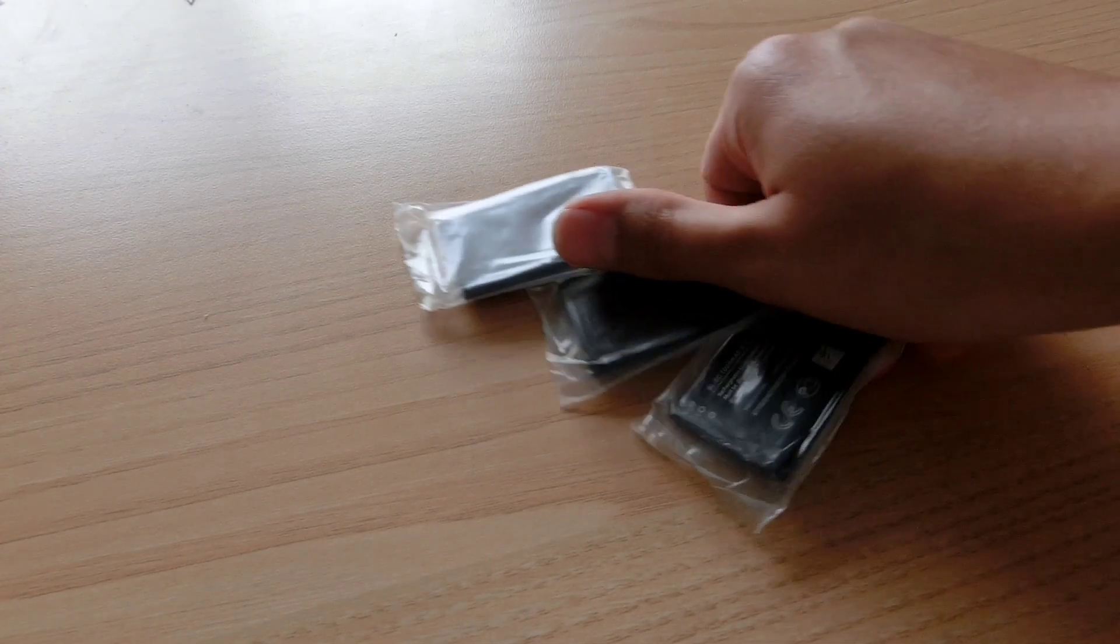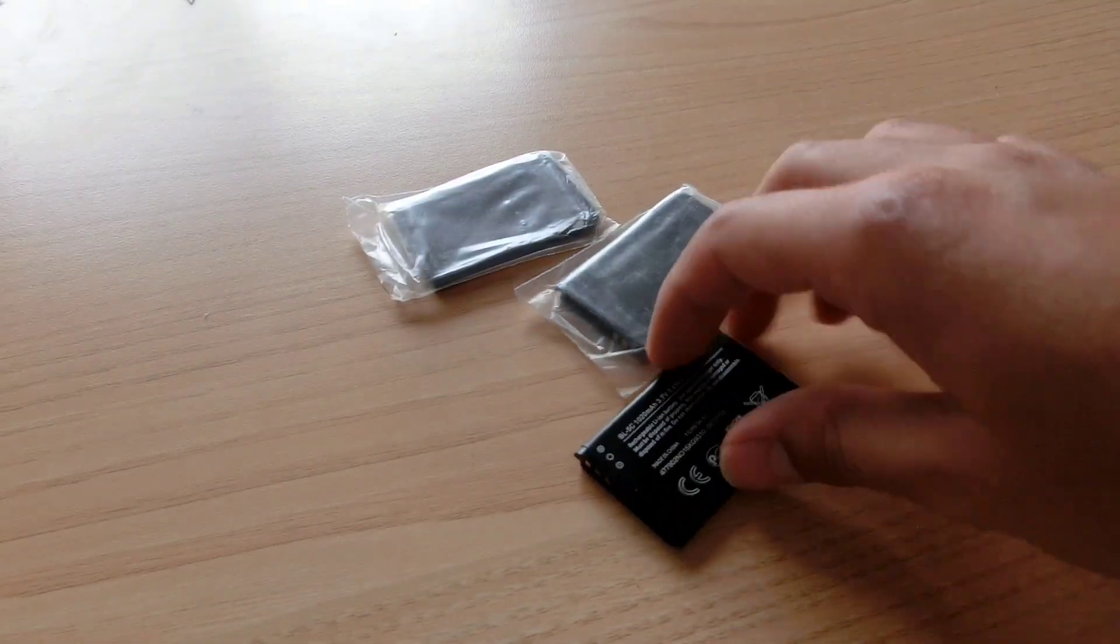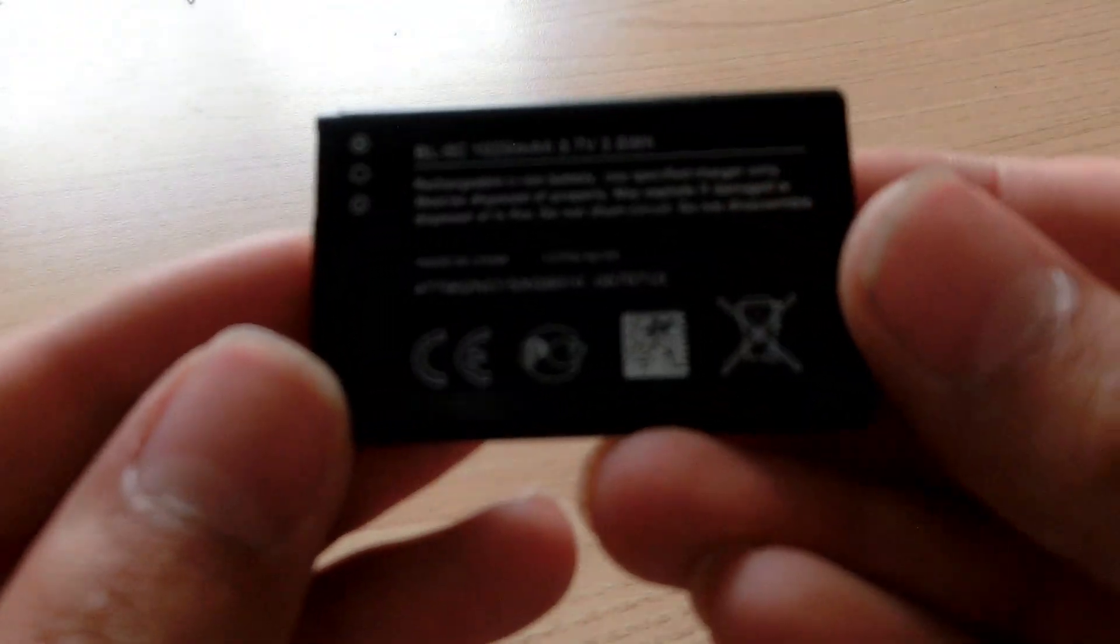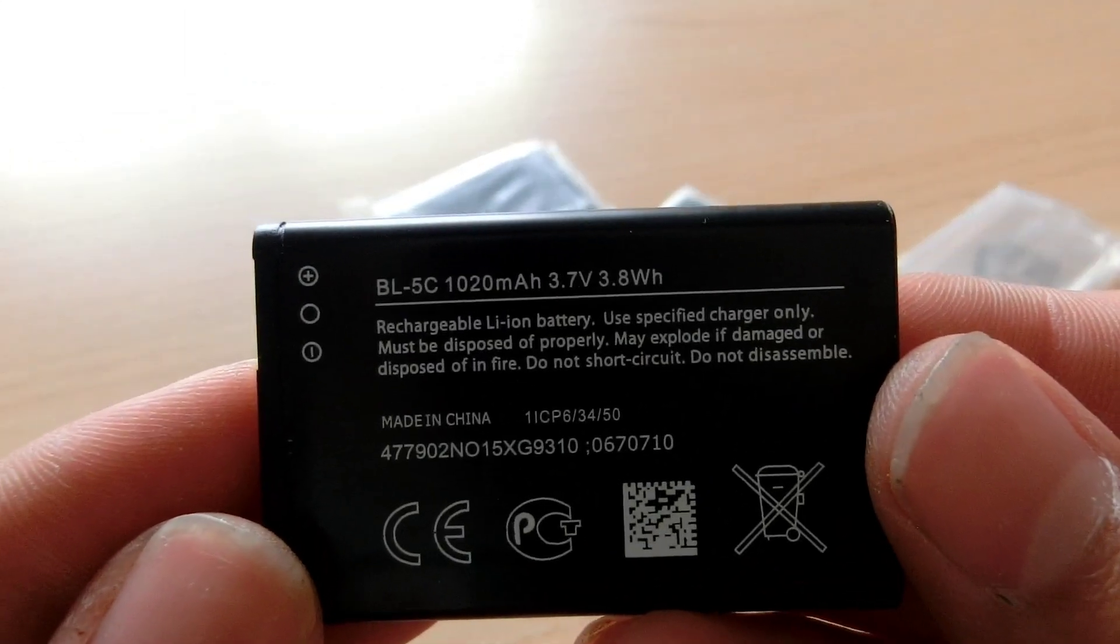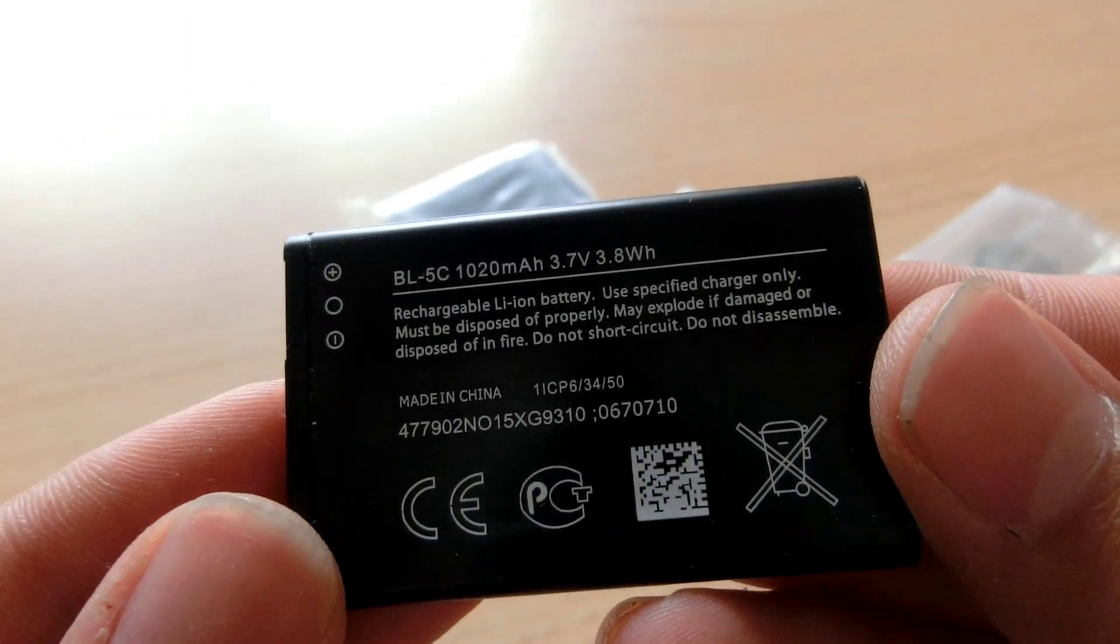Now take 3 lithium-ion batteries. These parts are designed for these Nokia batteries. Their model number is BL5C and they have a capacity of 1020mAh.